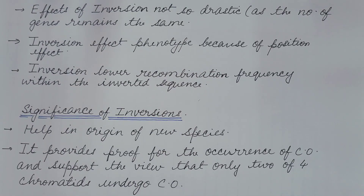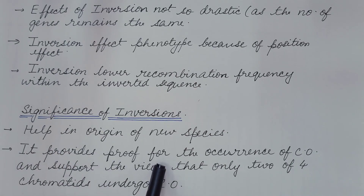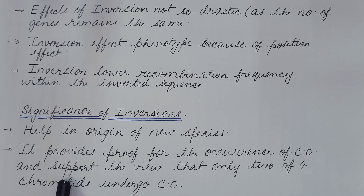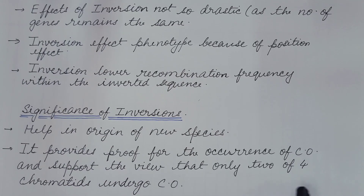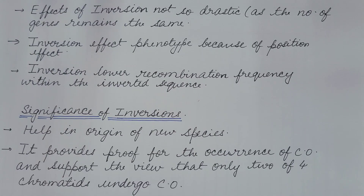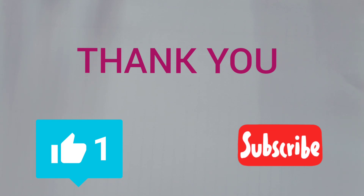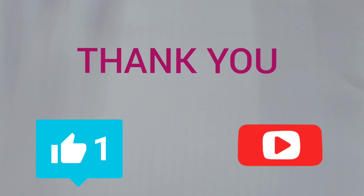The significance of inversion: inversion helps in the origin of new species. It also provides proof for the occurrence of crossing over, and supports the view that only two of the four chromatids undergo crossing over. In the next video we will discuss about translocation. If you like this video, please hit the like button, share it, and subscribe to my channel.